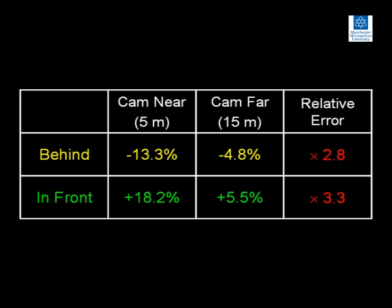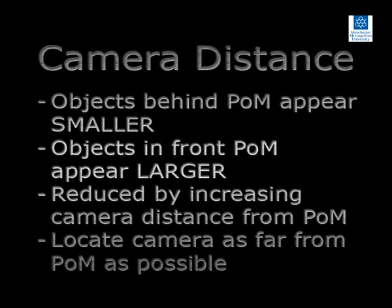Similarly, with the performer in front of the plane of motion, moving the camera to the far position reduced the percentage error by 3.3 times. Movement of the camera back from the plane of motion therefore significantly reduces measurement error due to movement of objects out of the plane of motion. To summarise: objects behind the plane of motion appear smaller; conversely, objects in front of the plane of motion appear larger. This effect is reduced by increasing the camera distance from the plane of motion. Therefore, it is important to locate the camera as far from the plane of motion as possible.